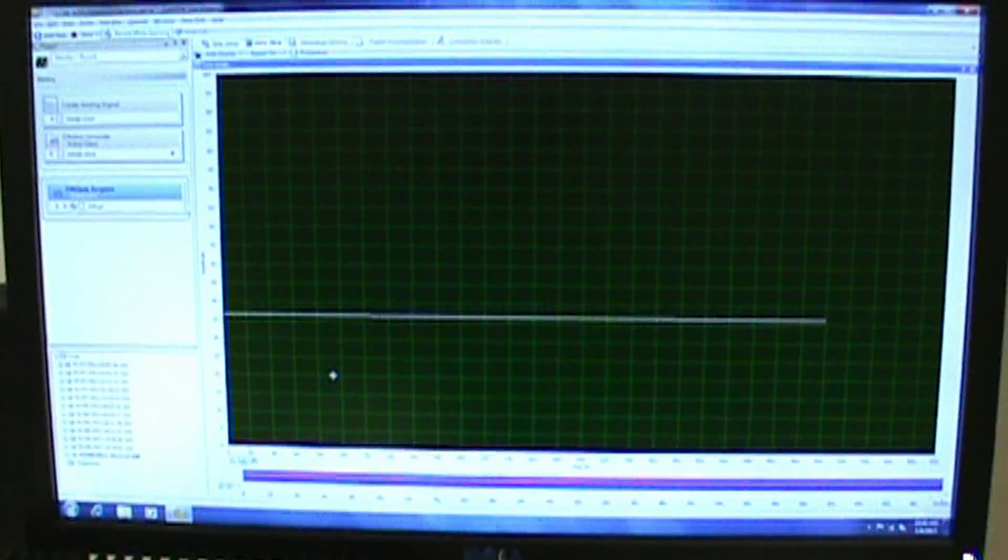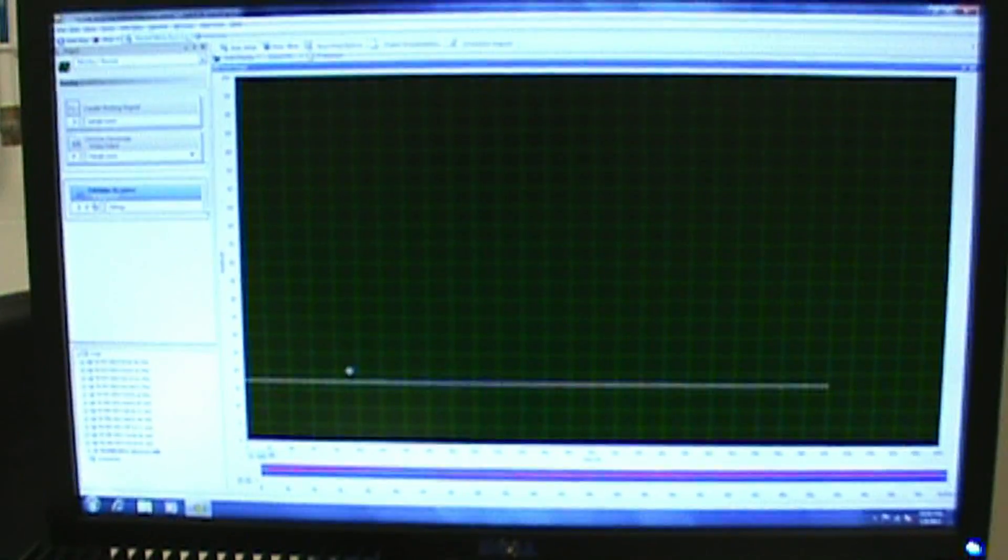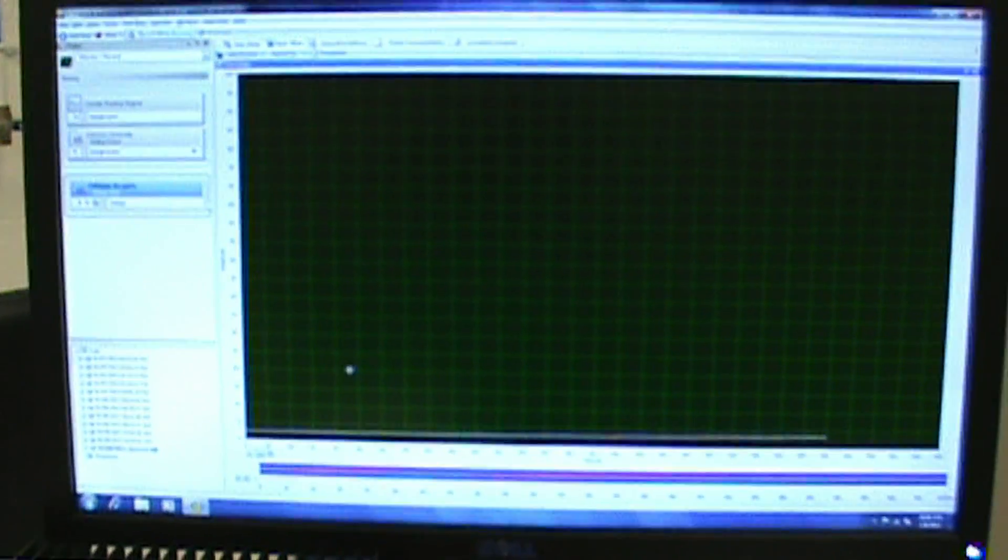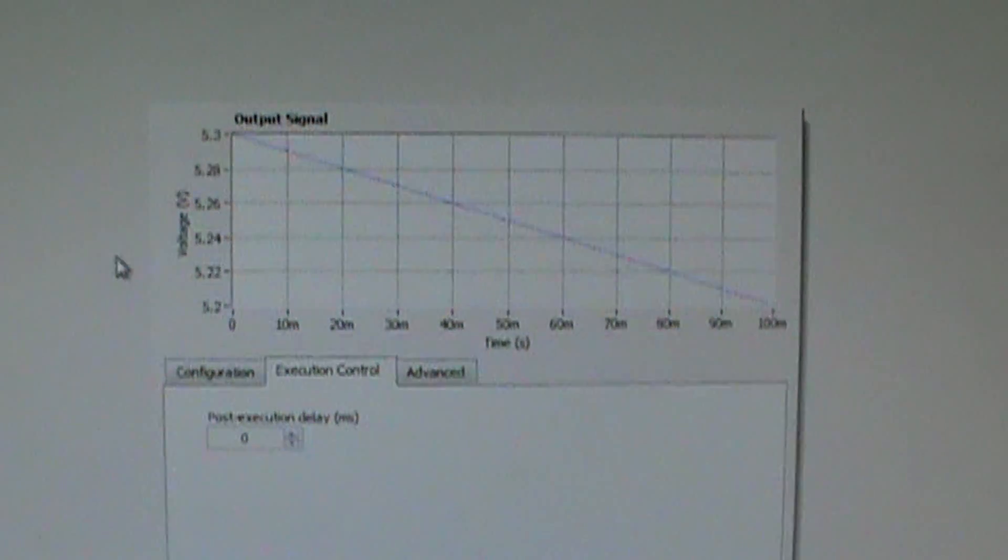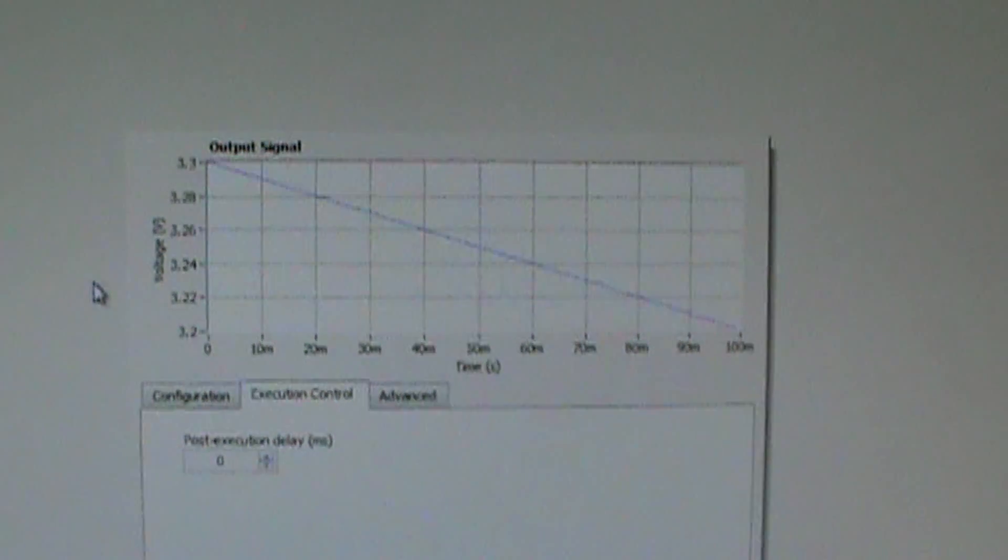And at the same time we're doing some data logging and I have a graph here that I'll put in. You can see how well this little pressure switch controls. Here's our triangle wave being generated by the National Instruments software.